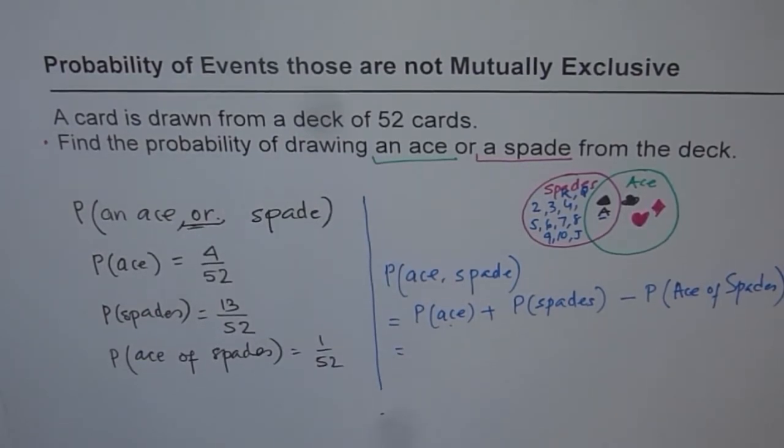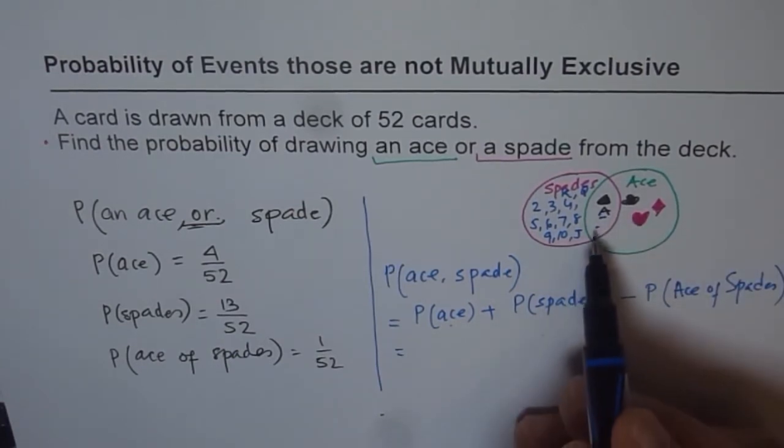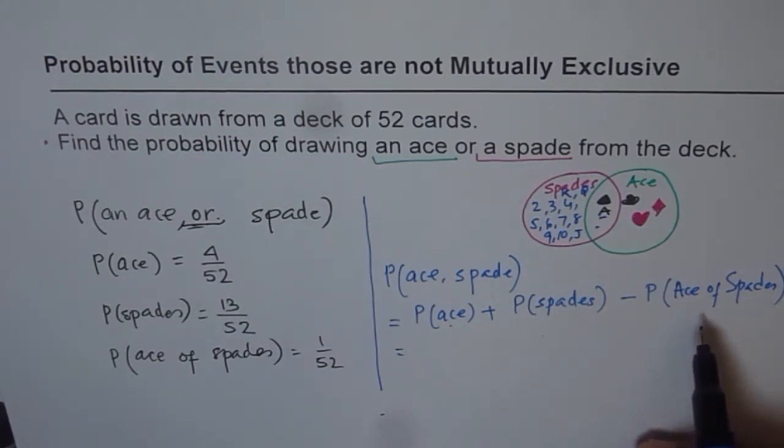So whenever the events are not mutually exclusive, remember, there is something common in between. So that is counted twice and we should subtract that one from the probability to get the right answer.